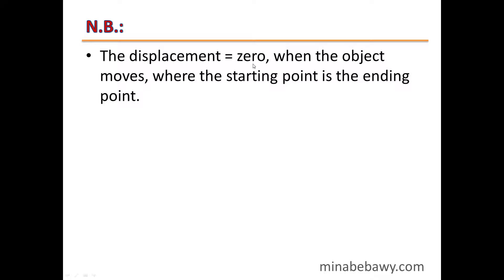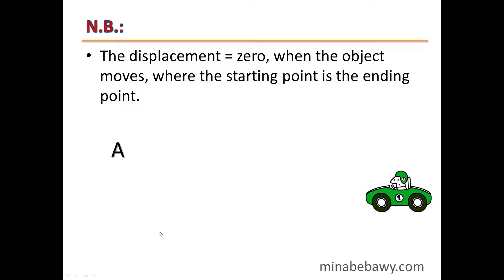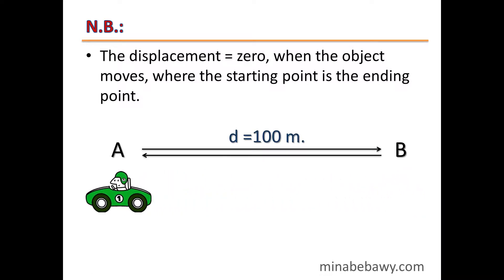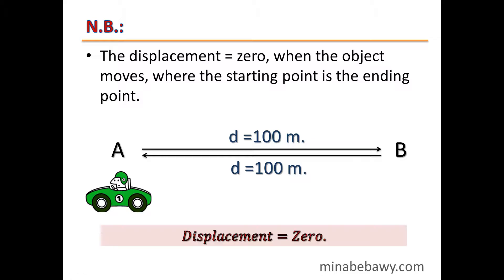Displacement may be equal to zero when the object moves such that the starting point is the same as its ending point. For example, if a car moves from A to B — a distance of 100 meters — then returns to its starting position, its total distance is 200 meters, while its displacement is zero, because its starting point is its ending point.